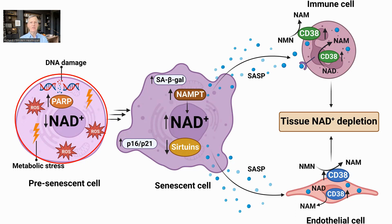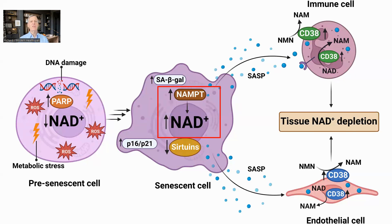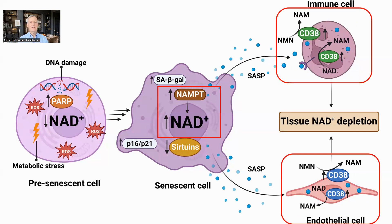However, generating SASP and the development of senescence are metabolically expensive activities which require NAD. To this end, senescent cells upregulate NAMPT to increase NAD. The SASP, which is secreted, then regulates NAD in other cells through promotion of CD38, which consumes NAD.